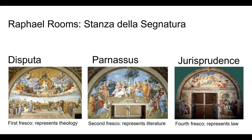Of the four rooms Raphael completed, we will be focusing on the Stanza della Signatura. Inside, there are four frescoes: Disputa, representing theology; Parnassus, representing literature; School of Athens, which stands for philosophy; and jurisprudence, representing law. The coexistence, clashing, and development of these parts of culture are depicted in Raphael's paintings. As higher class individuals began to value art and the advancement of ideas, art pieces like these became social commentary and topics of discussion for the educated.